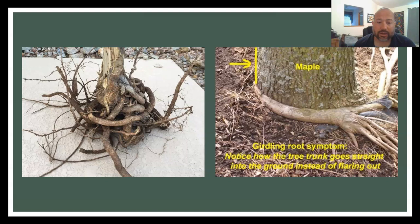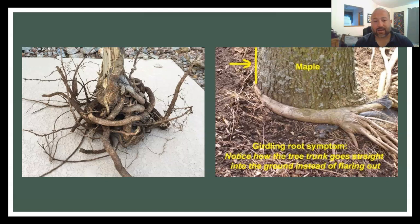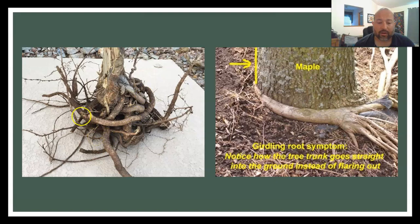Girdling roots are roots that wrap around the stem. We want to avoid these because as the tree grows, they will essentially choke it out and prevent it from getting bigger. This is especially critical for younger trees we expect to grow over time.